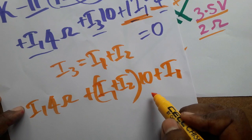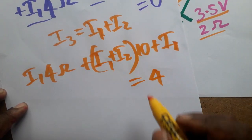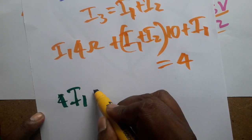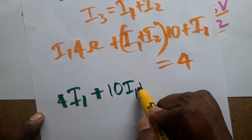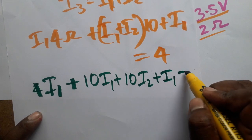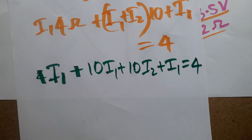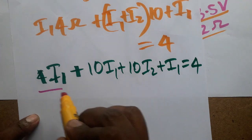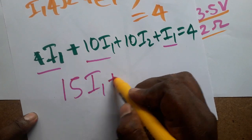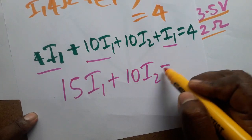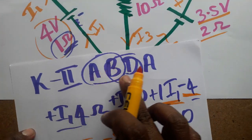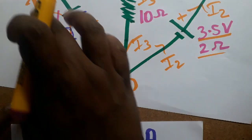Collecting all I1 terms: 4 + 10 + 1 = 15, so 15·I1 + 10·I2 = 4. This is Equation 1, obtained from loop A-B-D-A.